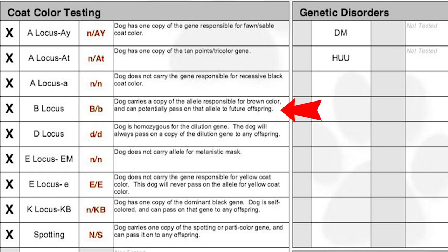Moving on to the B locus — Sincere is uppercase B/lowercase b, meaning he has one copy of the dominant black pigment B allele and one copy of the recessive lowercase b allele responsible for chocolate. So he carries a copy of the allele responsible for brown color and can potentially pass that allele to future offspring. Based on his B/b, he's supposed to have a black pigment, and he has a possibility of passing down either a dominant capital B or a recessive lowercase b allele.